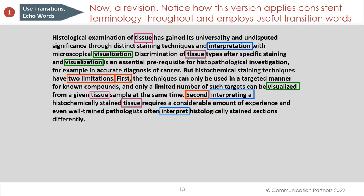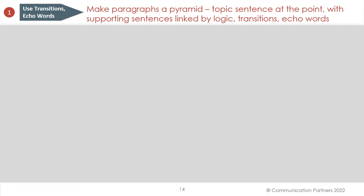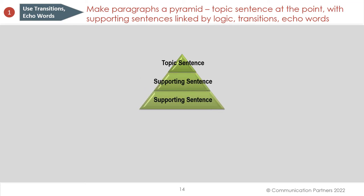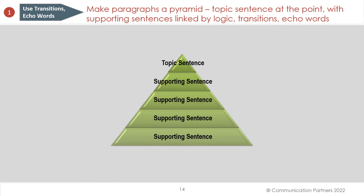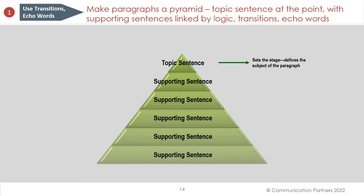Make your paragraphs a pyramid — topic sentence at the top, with all supporting sentences linked by logic, transitions, and echo words. The topic sentence sets the stage, defines the subject of the paragraph, and all the follow-on sentences are logical, creating flow using transitions and echo words.